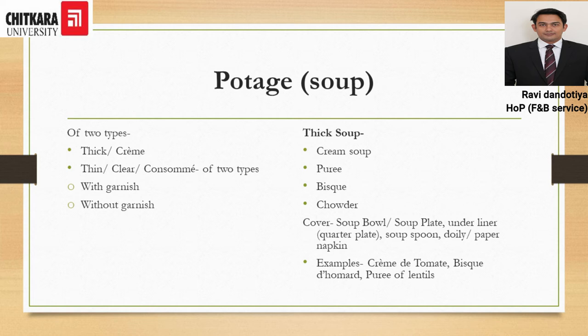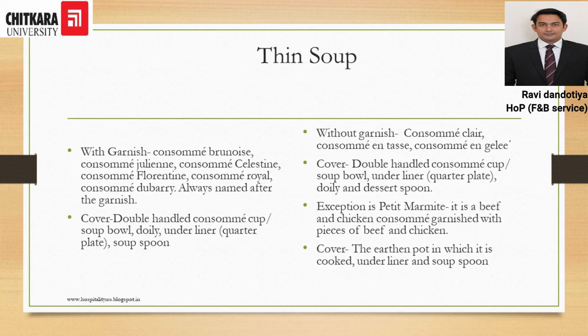Looking at thin soups served with garnish, examples include consommé brunoise, consommé julienne, consommé celestine, consommé florentine, consommé royal, and consommé du Barry. Most consommés are named after their garnish. Consommé is a clear soup which has been passed and clarified. The cover for consommé soup is a double-handled consommé cup or soup bowl, with a doily paper underliner, quarter plate, and a soup spoon.